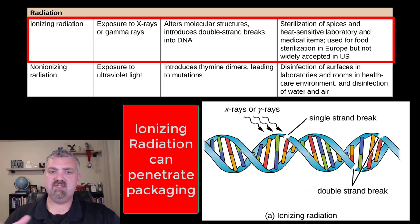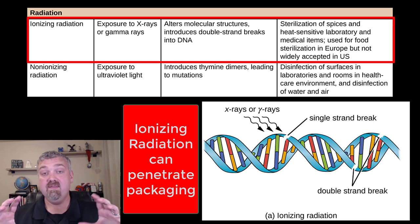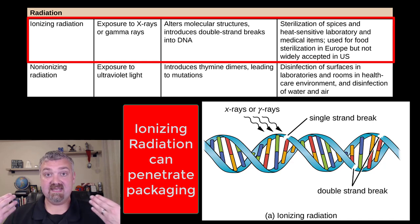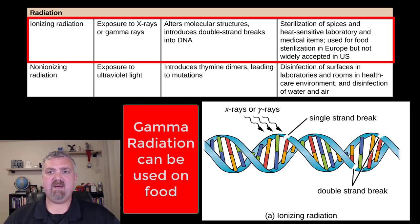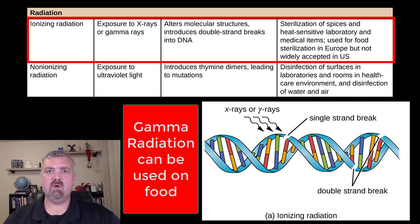The advantage of using gamma rays and x-rays is that they can easily penetrate surfaces like paper and plastic, so it's a great way to sterilize things that are in packages. This is used in food — spices are a great example where gamma radiation is used. In Europe and other parts of the world, many countries allow gamma radiation of all different types of foods, and there are certainly irradiated foods here in the United States, though it's been a little slower to catch on.